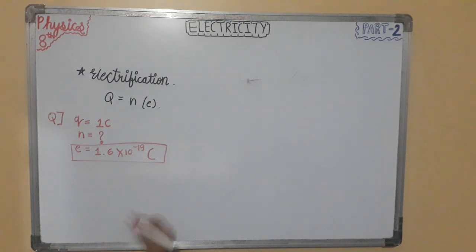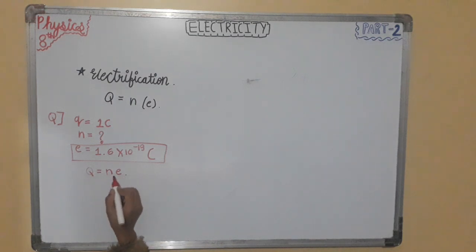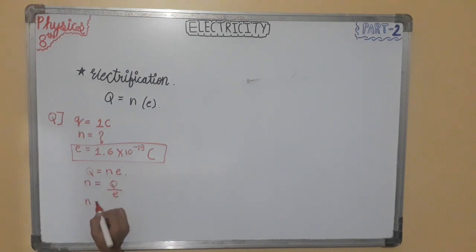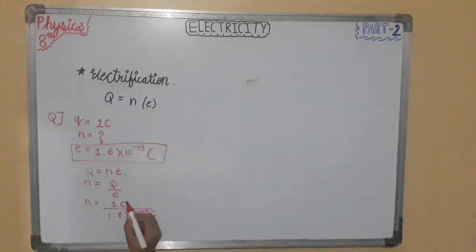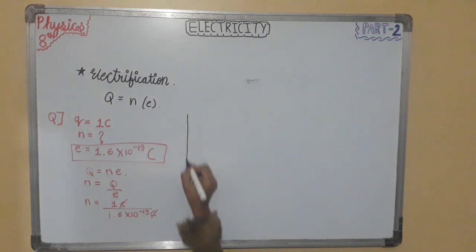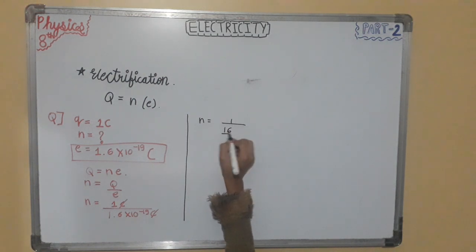Remember the formula: Q = ne. We have to find the value of n, so we transpose e. n is equal to Q upon e. So n = 1 coulomb divided by 1.6 × 10⁻¹⁹ coulomb.